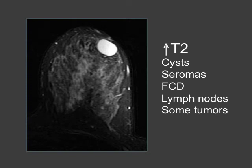Here is a unilateral T2 with fat suppression of the left breast. A cyst appears bright on T2. Seromas are also going to be bright, fibrocystic disease has increased signal, and lymph nodes may be very bright. Some tumors may have higher T2 signal than others, but they are generally not very bright.